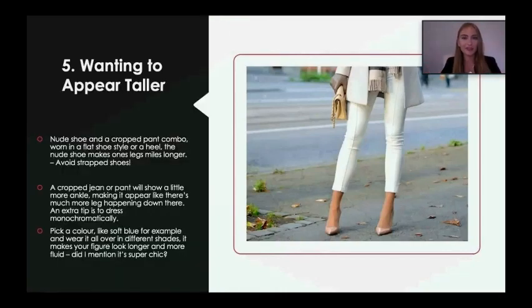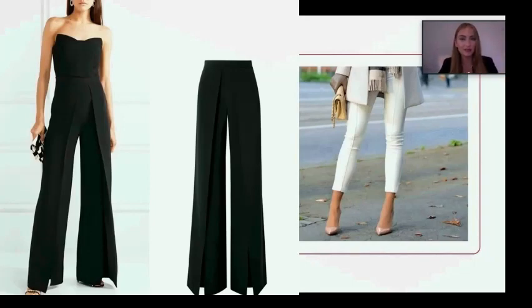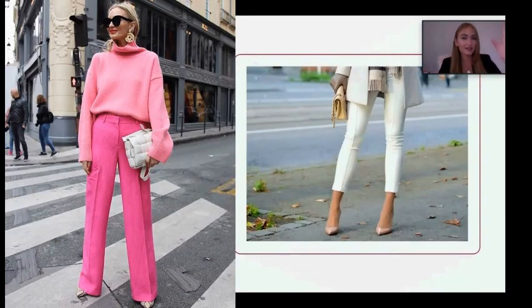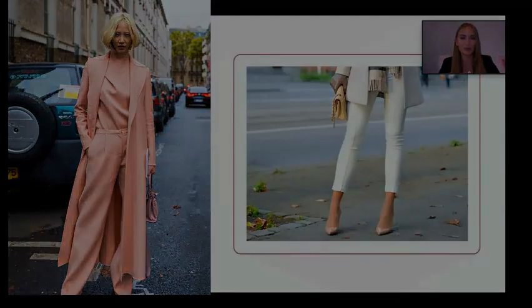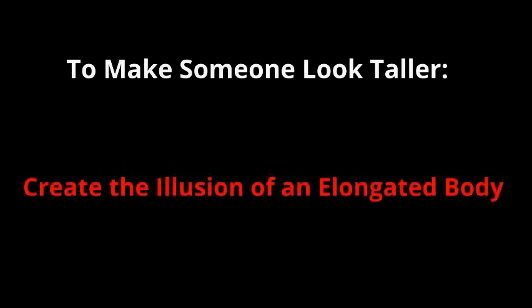Another good suggestion for making a person appear taller is to get pants that go all the way down to the floor. Floor-length pants end up continuing that person and making them look elongated. It's a similar trick to the nude color shoe — the nude color shoe ends up being continuous with the shade of the skin tone. Same thing with the pants: it's elongated and a continuous shade from foot to the waist, creating the illusion of a taller, elongated body.